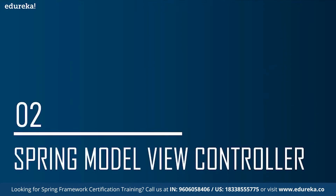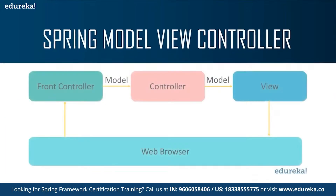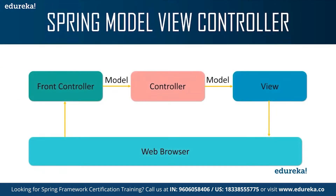Now let's see the Model View Controller framework of Spring. It comprises a web browser, a front controller, a model, and a view. A model contains the core data of the application — data can either be a single object or a group of objects. A controller contains the business logic of an application. You can use the @Controller annotation to mark a class as a controller. If you compare it to a computer system, the CPU acts as the controller in Spring MVC.